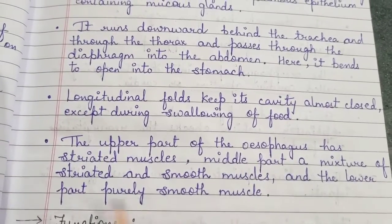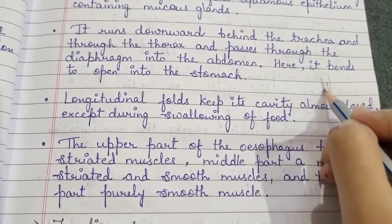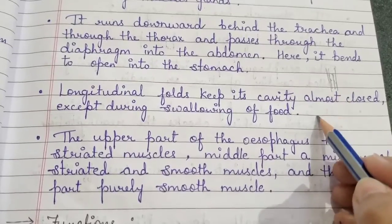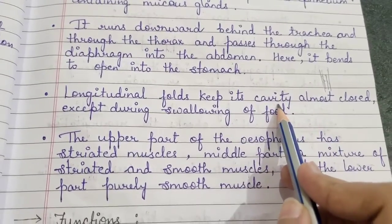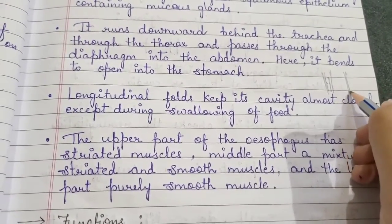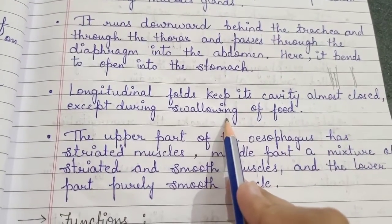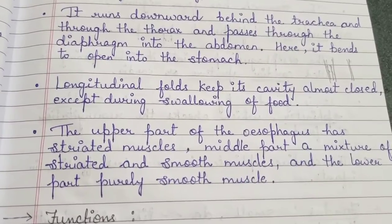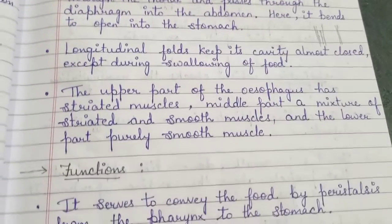Inside the esophagus there are longitudinal folds, which we also call rugae, present throughout the lining of the esophagus. These folds keep the inner cavity — the hollow space of the tube — almost closed, meaning it remains in a fully shrunk position. The cavity only opens when we swallow food or a bolus; otherwise, due to these longitudinal folds, it remains closed.